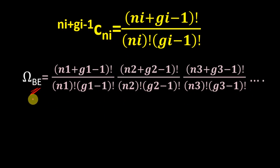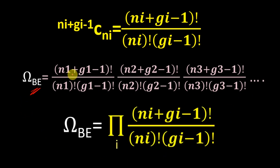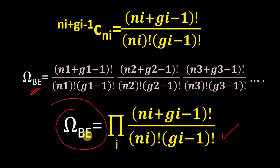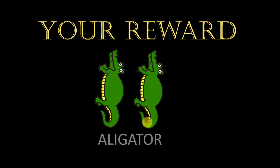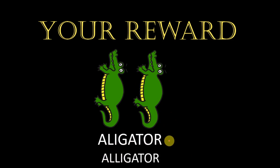This is the thermodynamic probability for one energy level. For all energy levels we take the product, giving the thermodynamic probability of Bose-Einstein statistics as the product from i equals 1 to the total number of energy levels of (Ni + Gi - 1)! divided by Ni! times (Gi - 1)!. From this we will find the Bose-Einstein distribution law. As a fun reward, here is a riddle: what would you call two aligned crocodiles? An alligator — because they are aligned and there are two L's. Thanks for watching, and always remember that math is everything!